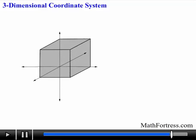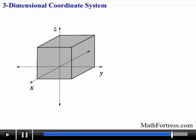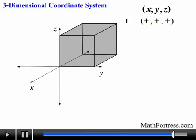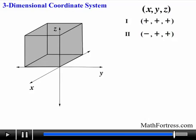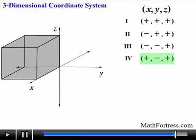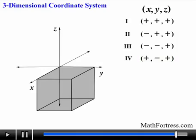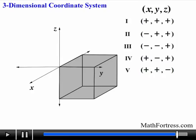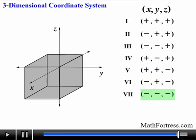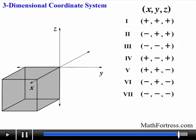Just like the quadrants of a 2-dimensional coordinate system determine the sign of each coordinate, so does each octant. In the first octant, all three coordinates are positive. In the second octant, the x-axis is negative and both the y and z axes are positive. In the third octant, both x and y are negative and z is positive. In the fourth octant, both x and z are positive and y is negative. In the fifth octant, both x and y are positive and z is negative. In the sixth octant, x and z are negative and y is positive. In the seventh octant, all three are negative. And finally, in the eighth octant, x is positive and both y and z are negative.